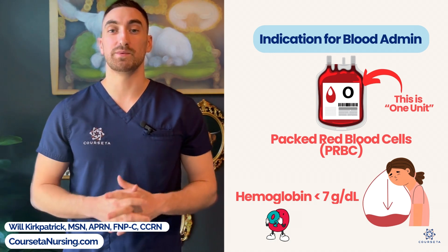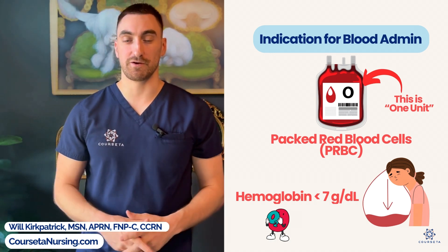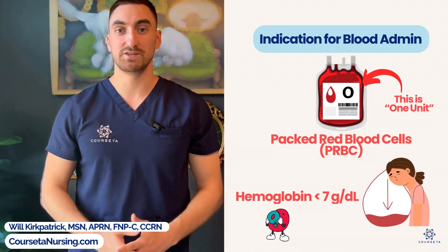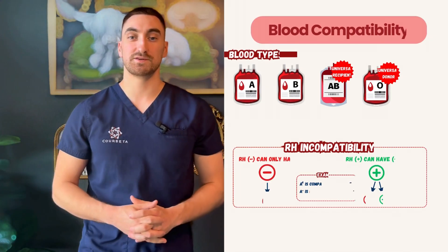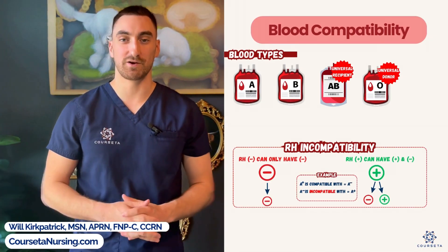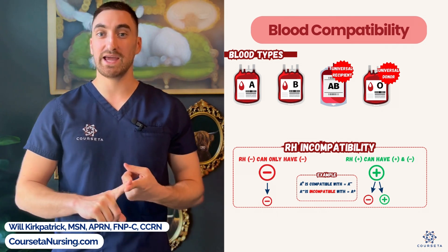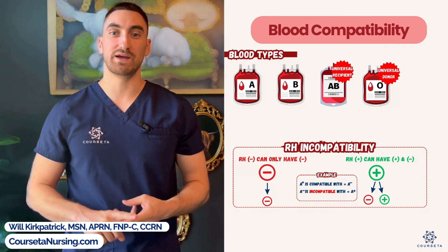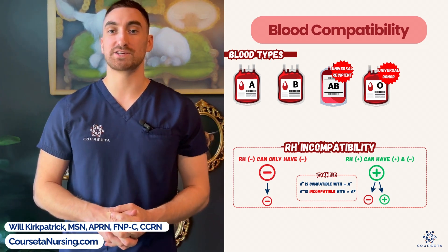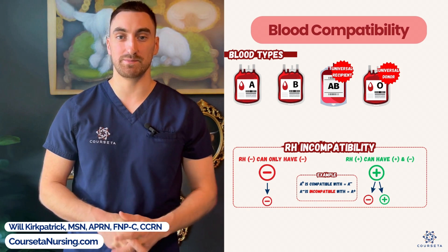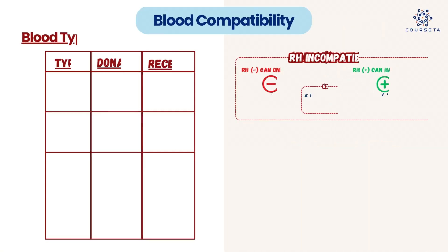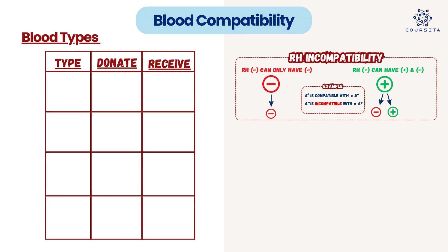Hemoglobin is the lab that we actually monitor the most to indicate if they need a blood transfusion. When we have determined that a patient needs a blood transfusion, every hospital system has a systematic process to ensure safe administration. First, we need to make sure that the blood is going to be compatible with our patient. There are four blood types: A, B, AB, and O. With each one of these types, we also have to consider RH compatibility.